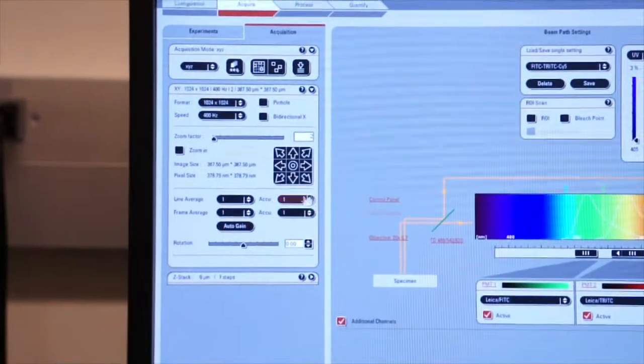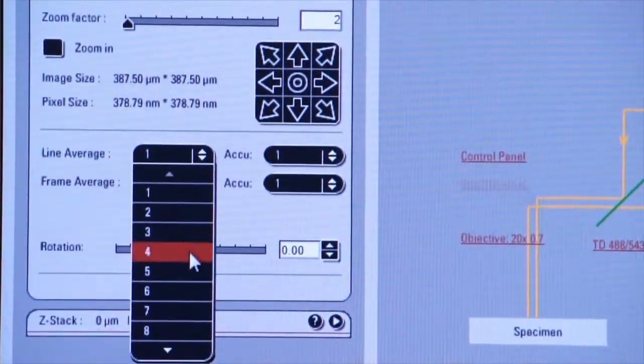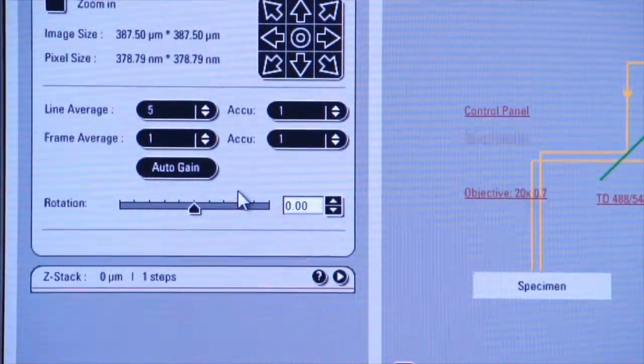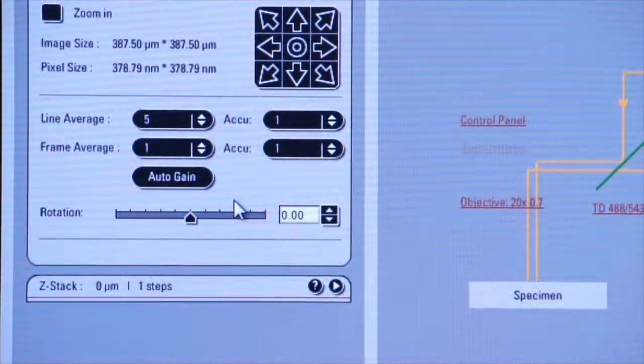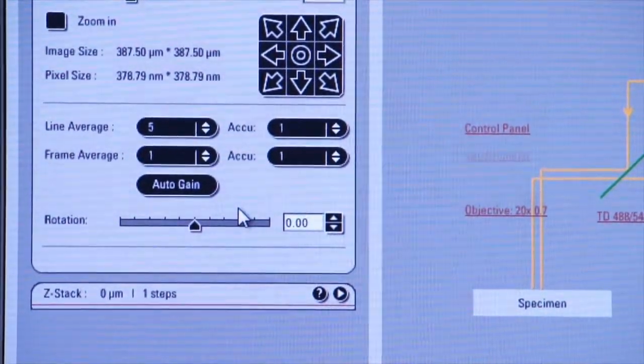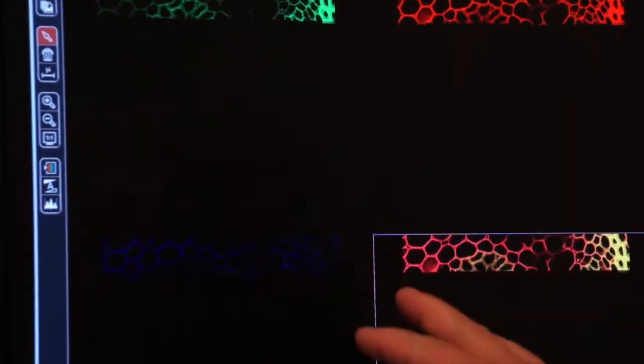Well if we go back over to the other screen now we can implement line average and here we're going to average out the information from five different line scans. Because we're scanning each line five times this will slow down. I'm going to click on capture an image and you can watch the screen here and you'll see the image being collected and now you can see it's a little bit slower.